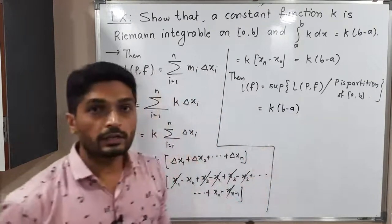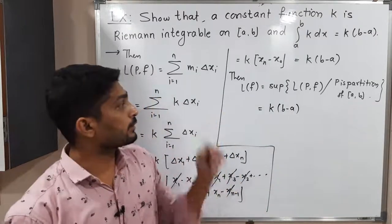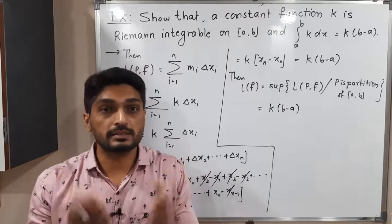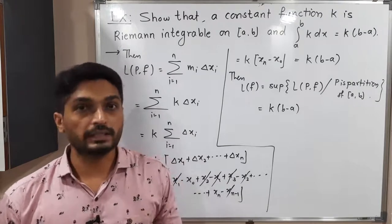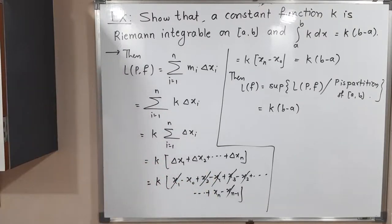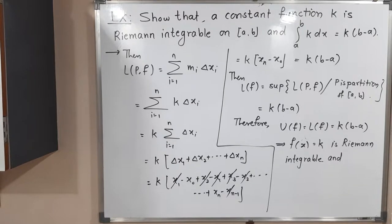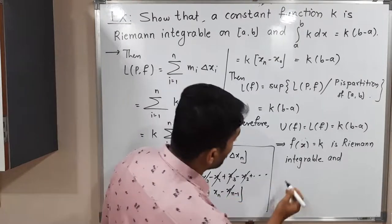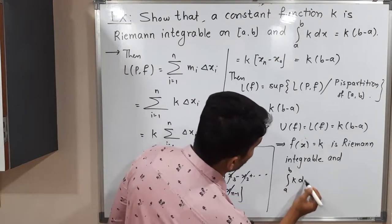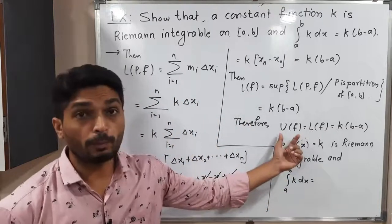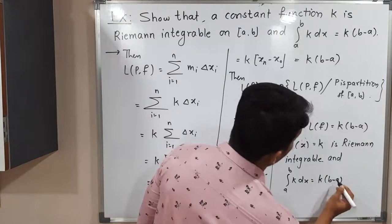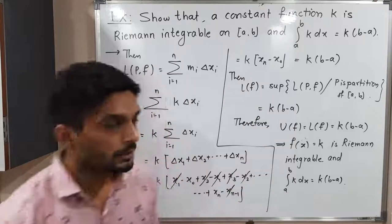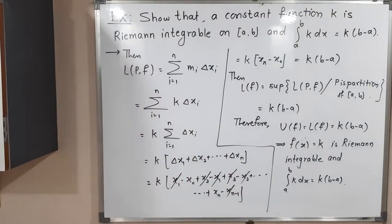We calculated the upper integral and lower integral, and found that both equal k(b − a). Since both are equal, we can declare that the function is Riemann integrable. And the value of the integral ∫ₐᵇ k dx equals the common value of the upper and lower integrals, which is k(b − a). Proof is complete.